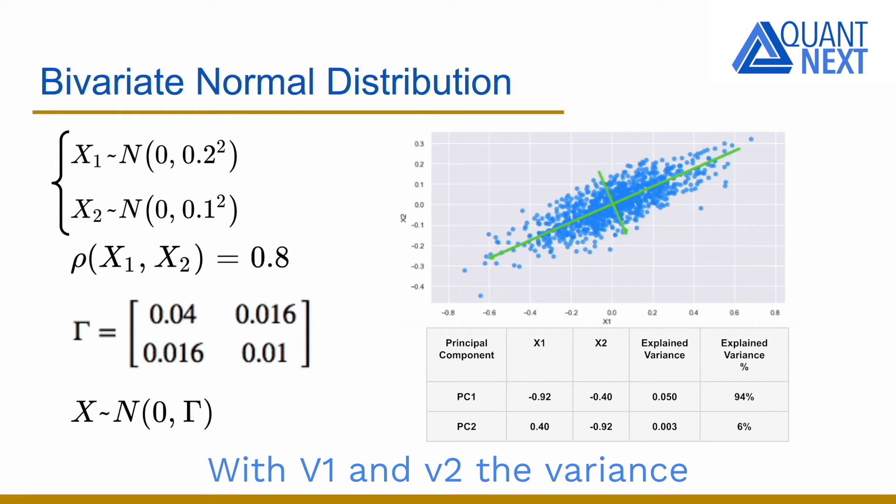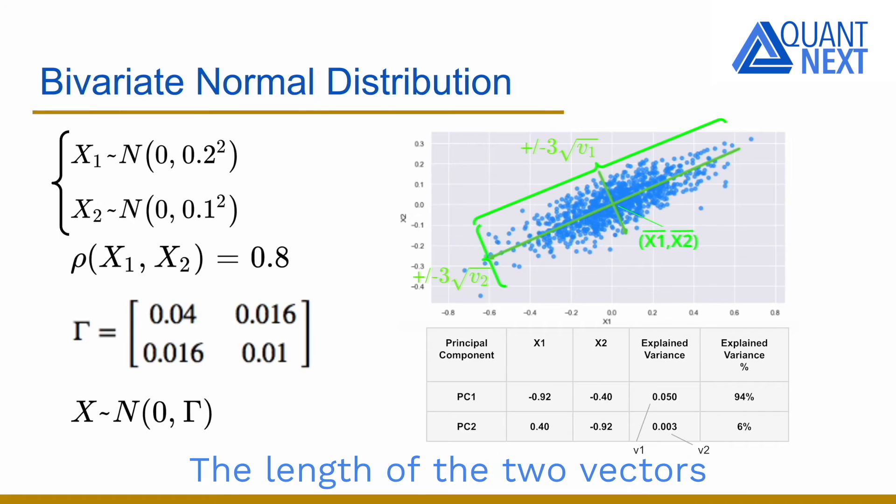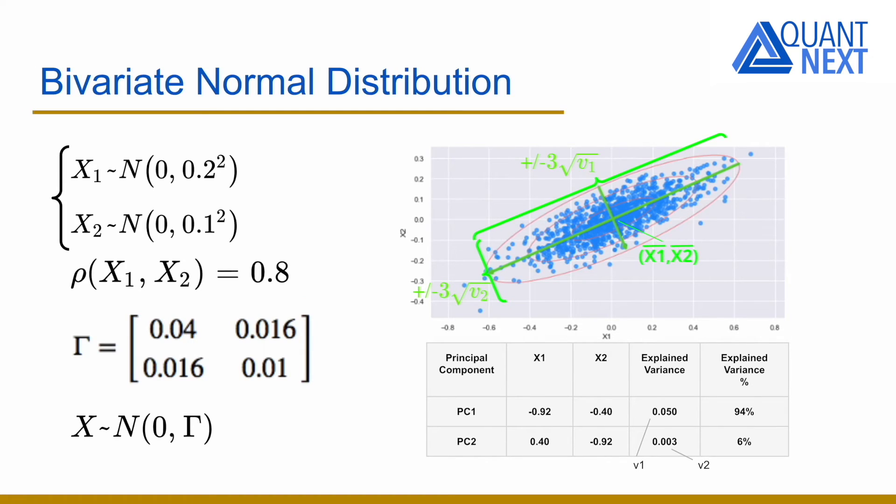With v1 and v2, the variance explained by the first and the second principal components, we draw the new axes from the center of the data points. The length of the two vectors in each direction is equal to 3 times the square root of the corresponding variance explained. The PCA is actually equivalent as fitting an ellipse to the data. We plot here the 1, 2 and 3 standard deviations ellipses. The 3 standard deviations ellipse encloses 98.9% of the data points.